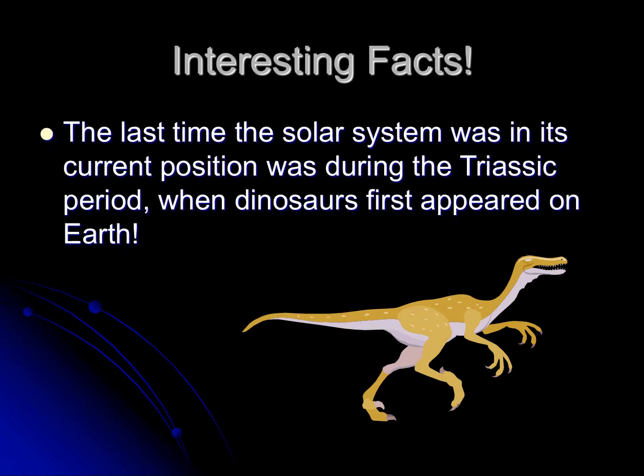The last time the solar system was in its current position was during the Triassic period. At that period, dinosaurs first appeared on the Earth. So the Triassic period marks the time of origination of the dinosaurs.